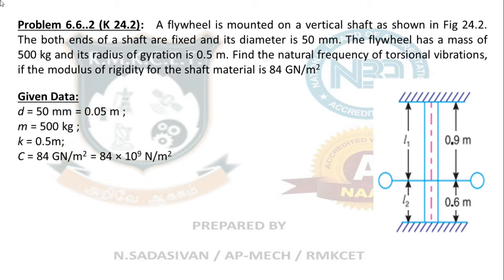Listen to the given data. Diameter of the shaft is 50 mm, mass of the flywheel is 500 kg, radius of gyration of the flywheel is 0.5m, and modulus of rigidity C is 84 GN/m², which is 84 × 10⁹ N/m².